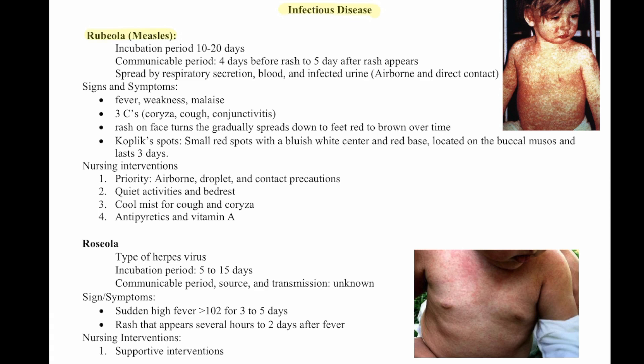Signs and symptoms are fever, weakness, and malaise. The three C's: coryza, cough, and conjunctivitis. They will have a rash on their face that gradually spreads down to the feet, turning red to brown over time. They'll have Koplik spots, which are small red spots with a bluish-white center and a red base located on the buccal mucosa, and they last three days.